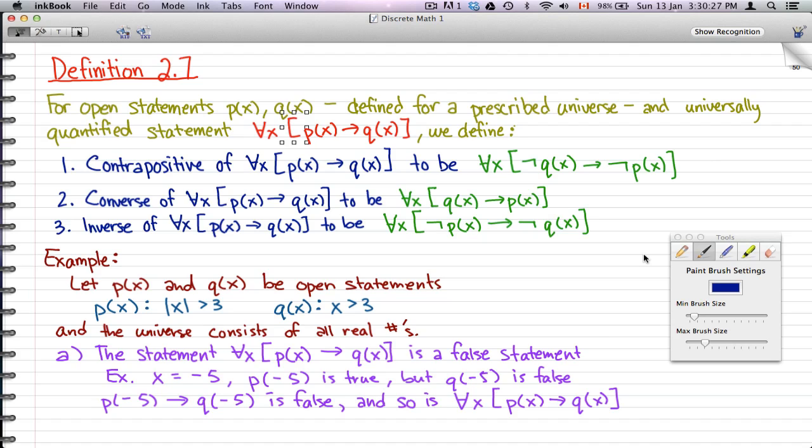But I'm just going to go over it just in case. So, I'm going to start off with the definition, and pretty much for open statements p(x), q(x), defined for a prescribed universe, and universally quantified statement ∀x [p(x) → q(x)], we define the contrapositive of ∀x [p(x) → q(x)] to be ∀x [¬q(x) → ¬p(x)].